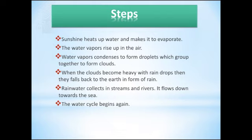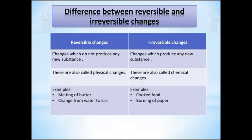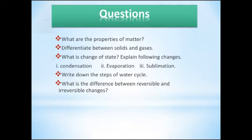Now here is the difference between reversible and irreversible changes. Changes which do not produce any new substance are called reversible changes. These are also called physical changes. For example, melting of butter and change from water to ice. Irreversible changes are changes which produce new substances. These are also called chemical changes. For example, cooked food and burning of paper.